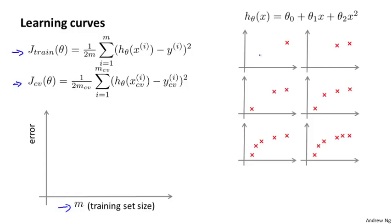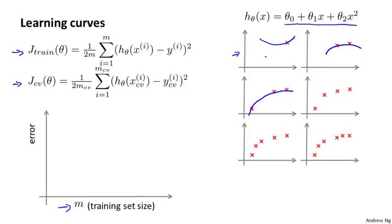Suppose I have only one training example. Let's say I'm fitting a quadratic function. If I have only one training example, I'm going to be able to fit it perfectly — zero error. If I have two training examples, with a quadratic function I can also fit that very well. And if I have three training examples, you can fit the quadratic function perfectly. So if m equals one, two, or three, my training error is going to be zero, assuming I'm not using regularization.